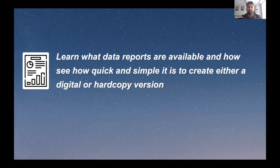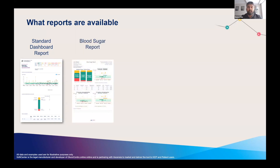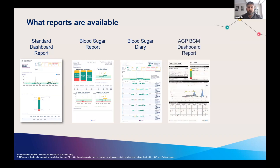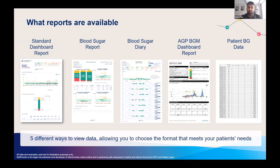Let's go through the different available reports. There are currently five output reports available within Glucocontro. The first is the standard dashboard report, the next is the blood sugar report, the third is the blood sugar diary. Glucocontro also allows you to view data as an ambulatory glucose profile or AGP, which is the fourth report, with the fifth report being a raw data output. Having different report formats allows you to pick the format to meet you and your colleagues' needs.